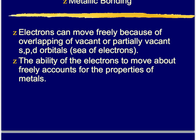Now let's discuss metallic bonding. In metallic bonding, electrons can move freely because of overlapping vacant or partially vacant SPD orbitals — we describe this as a sea of electrons. We have all these metal atoms together with this sea of electrons due to all the overlapping. The ability of electrons to move freely accounts for the properties of metals: they're shiny, good conductors of electricity and electrons, and they're ductile and malleable — we can shape them easily. They don't have that specific crystalline structure like an ionic bond that can break easily.